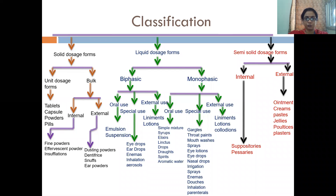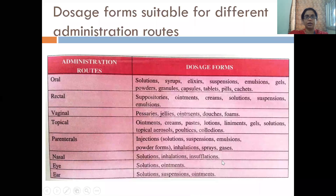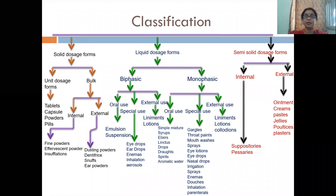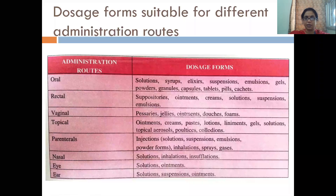You have to explain the classification of dosage forms. Physical classification is based on how it looks — how does it appear? If it is solid, we divide it in the solid category. If it is liquid, we divide it in the liquid category. If it is semi-solid, it goes in the semi-solid category.